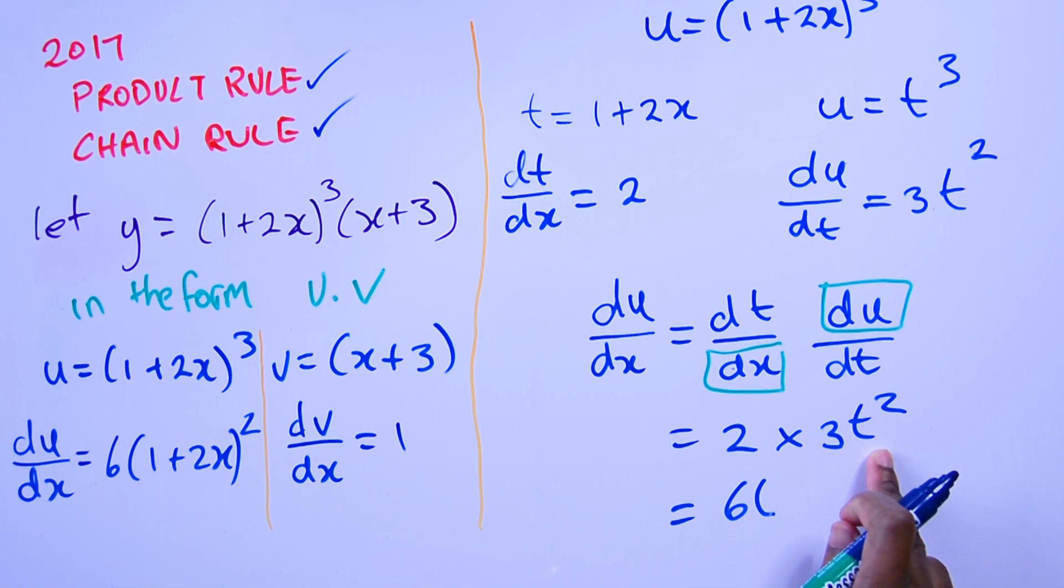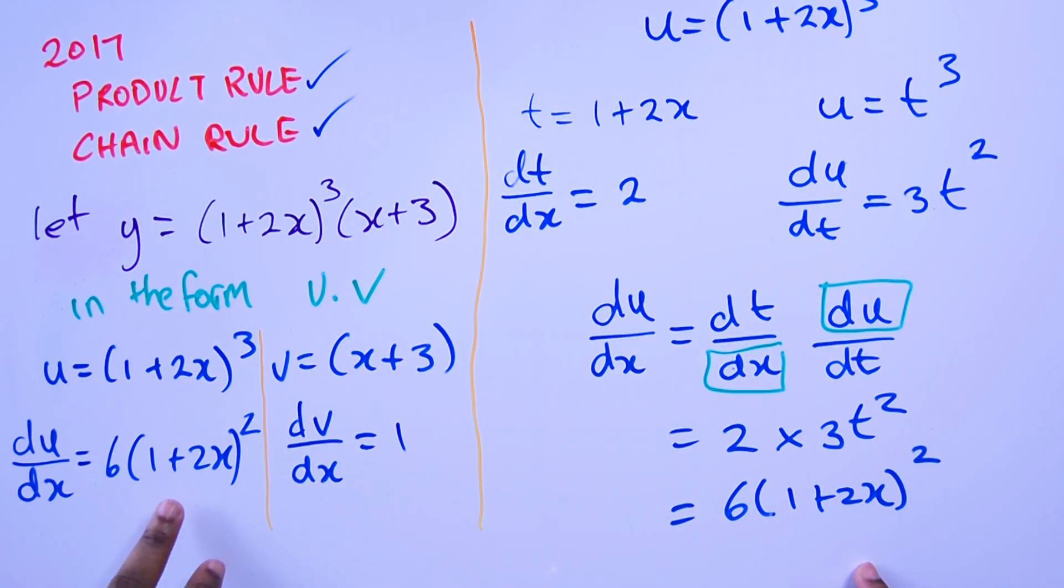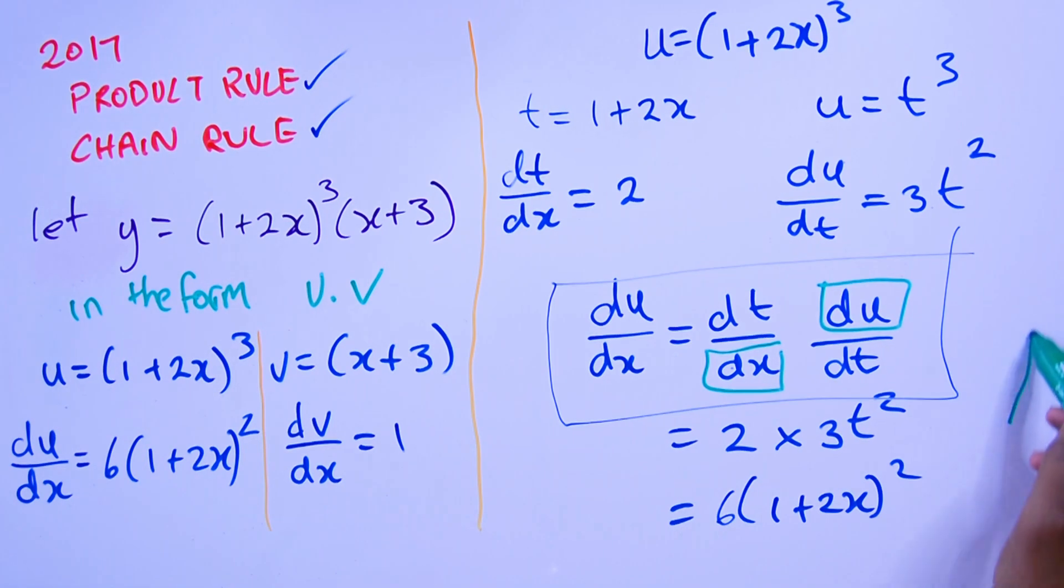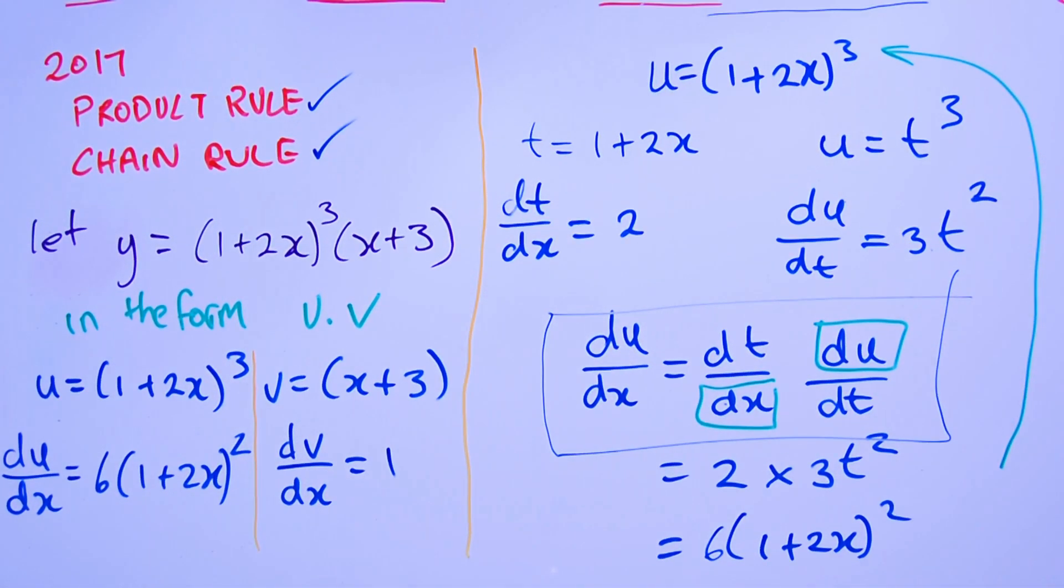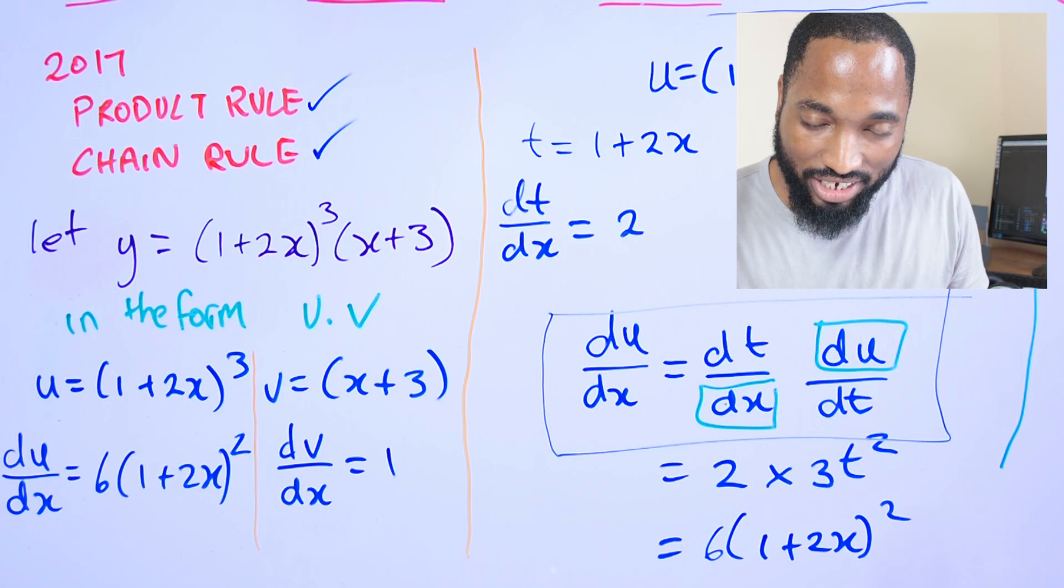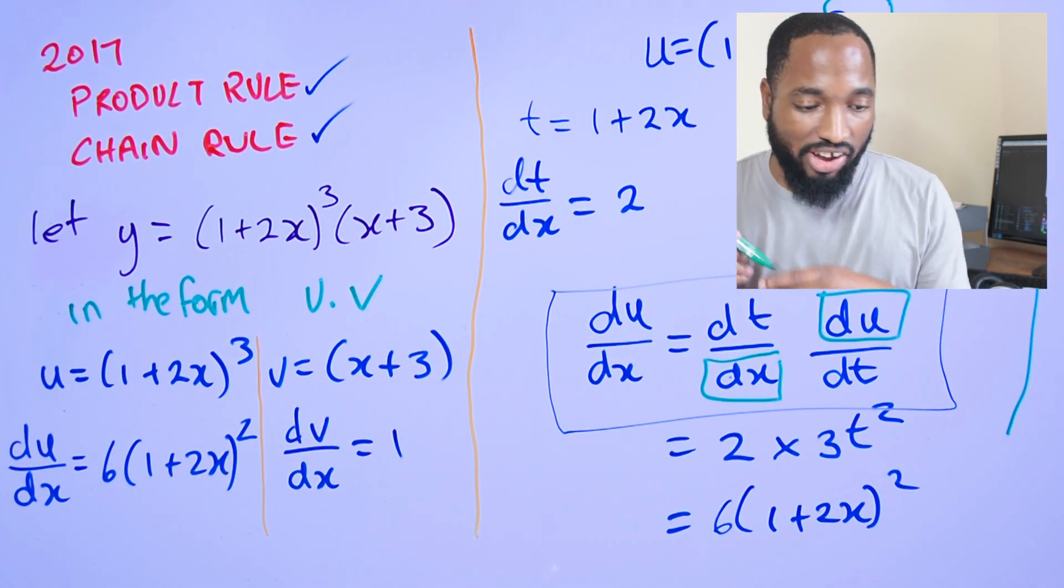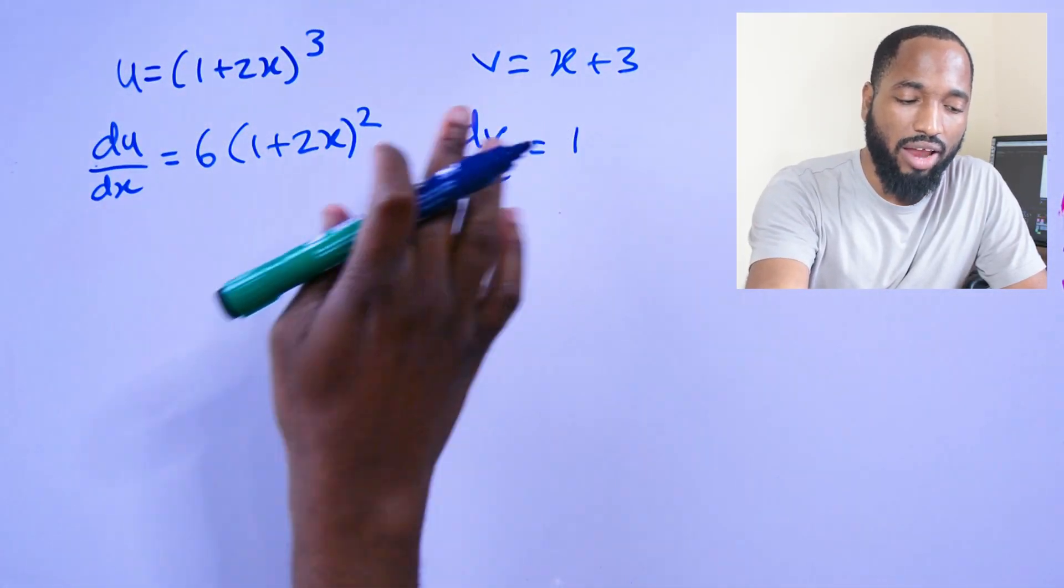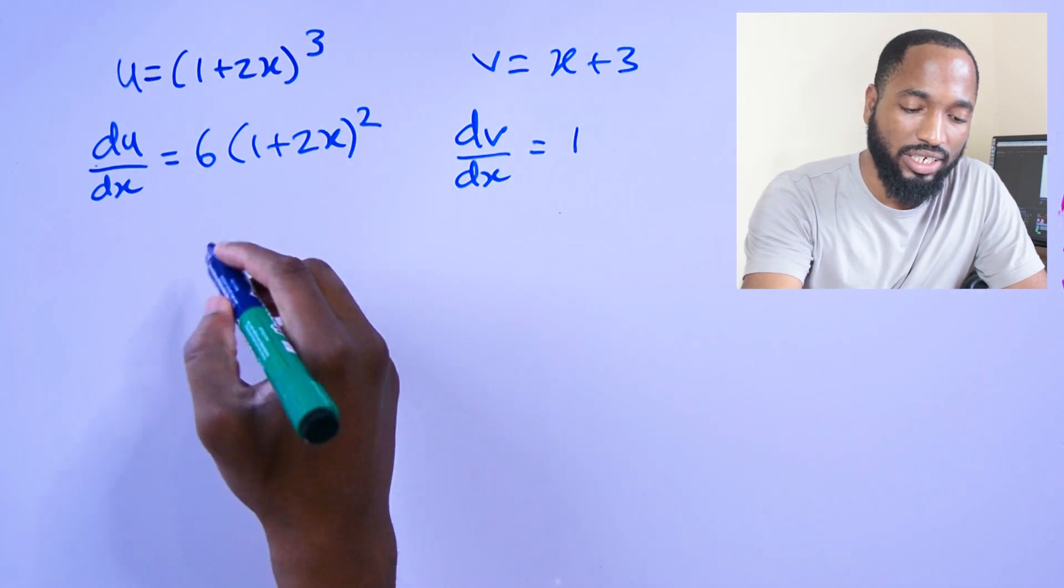Realizing that it is these two differentials we are looking for, we get 6t² where t is (1 + 2x)². This is the same thing I got here by differentiating it quickly at sight. That was a tree, in case you were wondering.